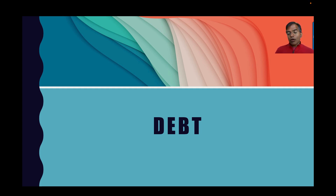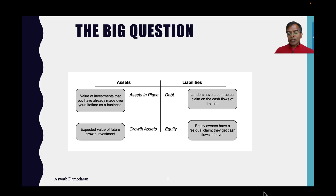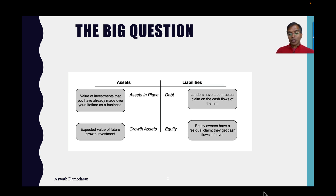In this dataset, I talk about how much companies owe, broken down by industry. To put it in context, let's step back. A company can be defined in terms of what it owns — assets in place, investments it's already made, and growth assets, investments it expects to make in the future. There are two ways you can fund the business: you can borrow the money (debt) or you can use your own money (equity).